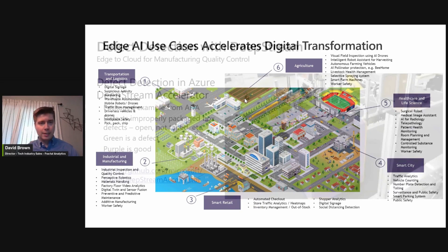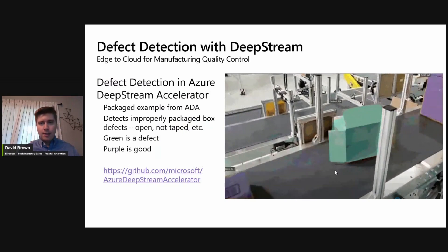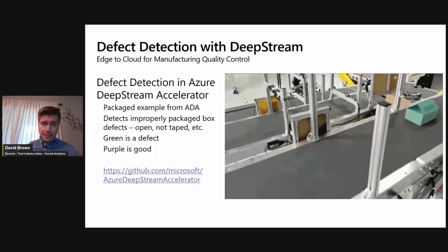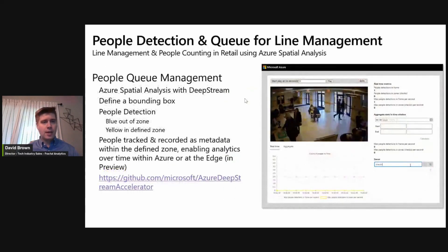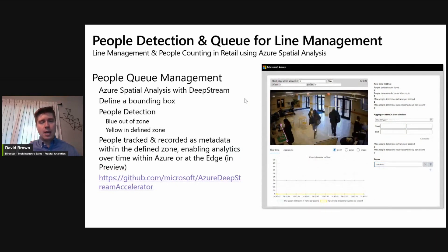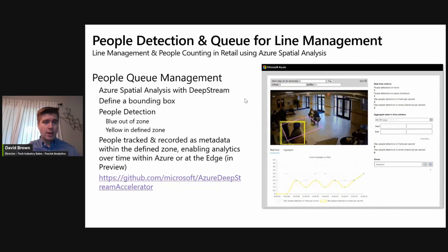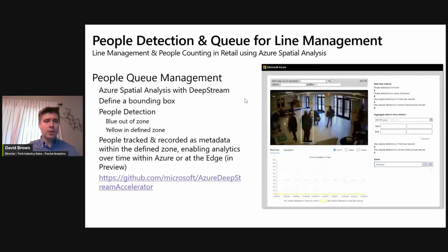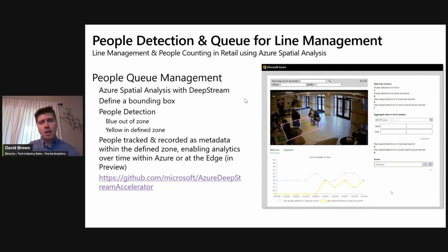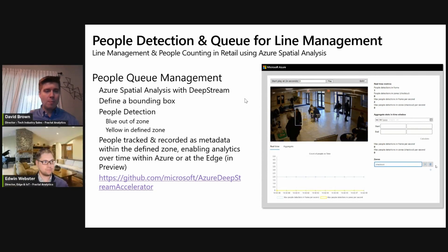In the example packaged within the Deepstream Accelerator, we are doing defect detection on boxes — a simple showcase of what can be done using this accelerator. Joe and team have also created several models, including people identification, queue management, hazard zone detection, and PPE — personal protective equipment detection — packaged and available through Azure Cognitive Services that work with the Azure Deepstream Accelerator. Our team is working with Joe's to offer white glove services for any customer requiring assistance for onboarding, and Fractal has a marketplace offer for support across the whole lifecycle, including provisioning and management of hardware through our Azure Marketplace listing.